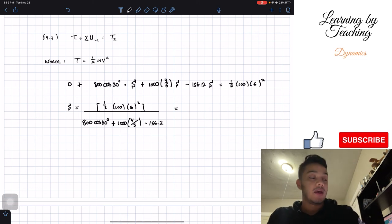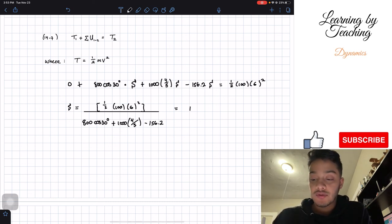And all we have to do now is plug it into our calculator, and if we plug this into our calculator, the answer is going to be 1.35 meters. And we round it up to two decimal places, and we found the answer for our problem.